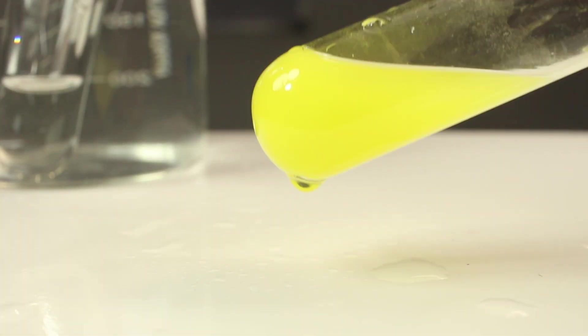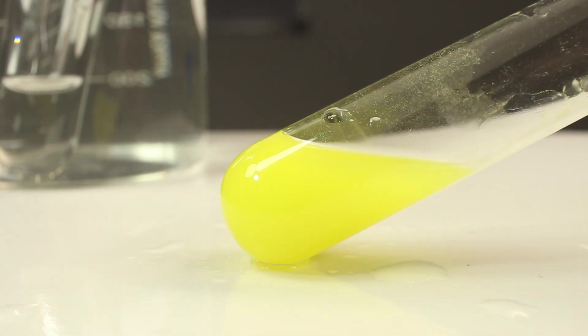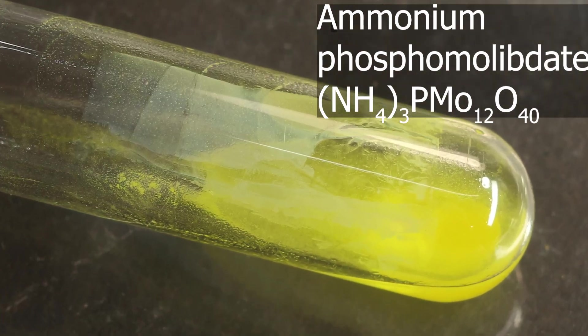Let's look at it closer. It's precipitate of ammonium phosphomolybdate. Bright yellow.